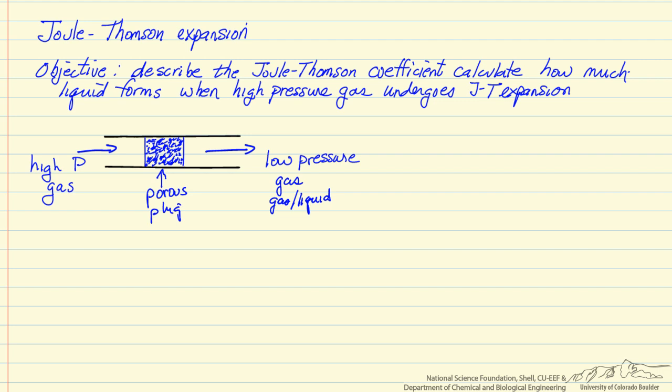The way we write the first law for Joule-Thompson expansion is that delta H equals zero. We're assuming the process is fast enough that the rate of heat transfer is zero. There's no moving parts, so the shaft work is zero. And we're going to ignore velocity differences, so we're ignoring any differences in kinetic energy.